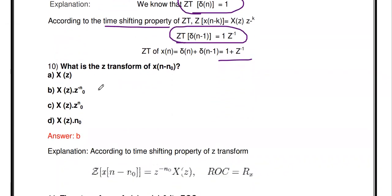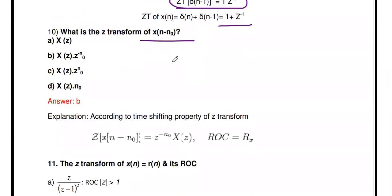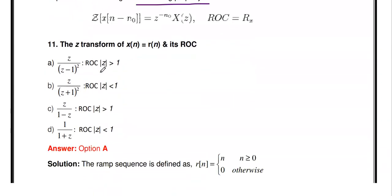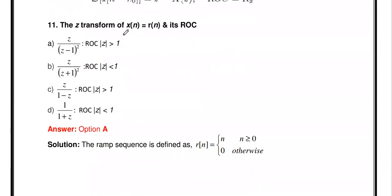What is the Z-transform of x[n - n₀]? According to the time shifting property, the Z-transform of x[n - n₀] is X(z)·z^(-n₀).